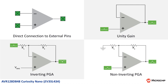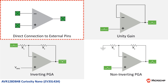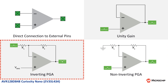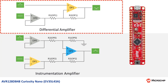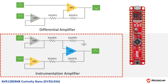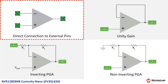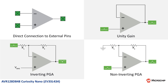The default firmware has six possible op-amp configurations: direct connection to pins, unity gain, non-inverting programmable gain amplifier, inverting programmable gain amplifier, differential amplifier, and instrumentation amplifier. The only configuration which requires external components is direct connection to pins. All other configurations use the internal resistor ladders and analog multiplexers. You can find more information about these configurations in the GitHub documentation or in the device datasheet.